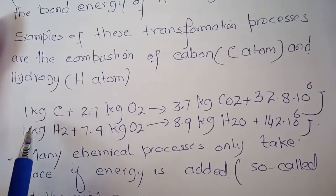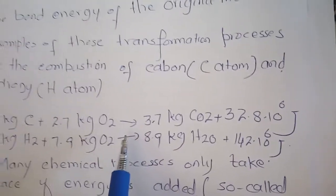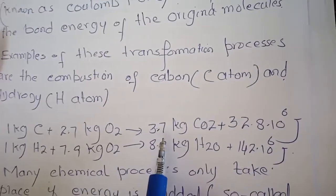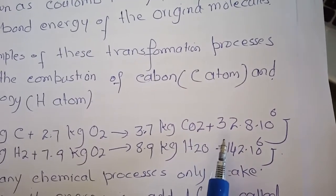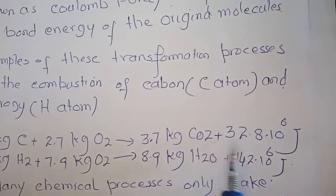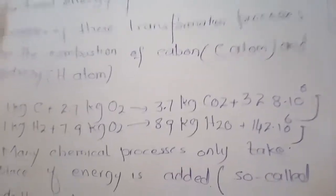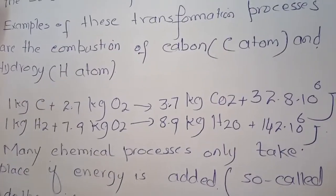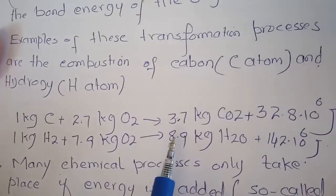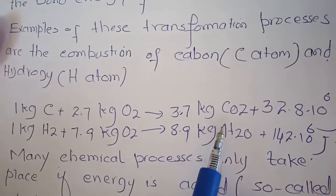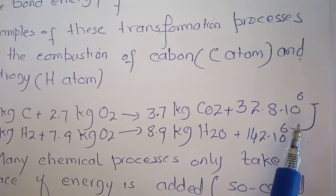Here, 1 kg carbon plus 2.7 kg oxygen gives 3.7 kg carbon dioxide plus 32.8 times 10 to the power 6 joules. Energy is released when we combine carbon and oxygen at certain proportions. Carbon dioxide is released and some quantity of energy is also released.